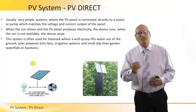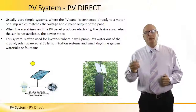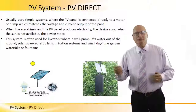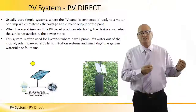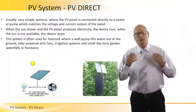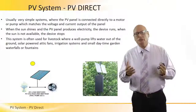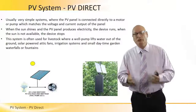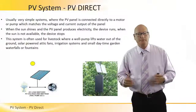When the sun shines and the PV panel produces electricity, the device runs. When the sun is not available, the device stops. If DC voltage is provided, it will be activated. If not, it will go to sleep.